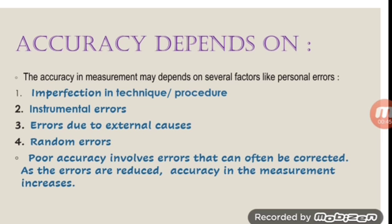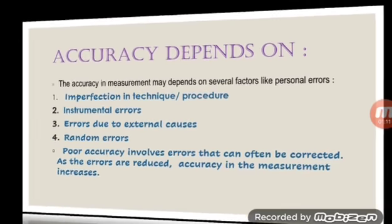The fourth factor is random errors, which we have already discussed. They are due to the irregular way — only due to the carelessness of the observer. Poor accuracy involves errors that can often be corrected. By eliminating the above-mentioned factors, we can improve the accuracy. As the errors are reduced, accuracy in the measurement increases.